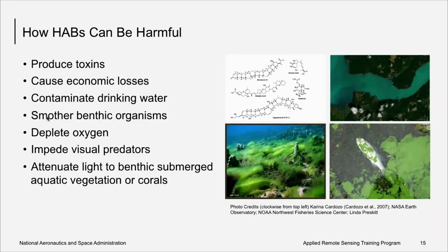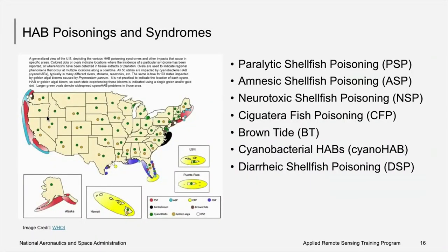How can HABs be harmful? There are a number of ways harmful algal blooms can be harmful. These include when they produce toxins, cause economic losses, contaminate drinking water, smother benthic organisms, deplete oxygen causing hypoxic zones, impede visual predators, and attenuate light to the benthos or bottom-dwelling submerged aquatic vegetation or corals. While all of these are ways that HABs can be harmful, it is the toxin production by HABs that causes a more urgent response by natural resource managers.